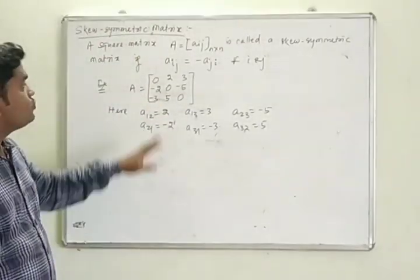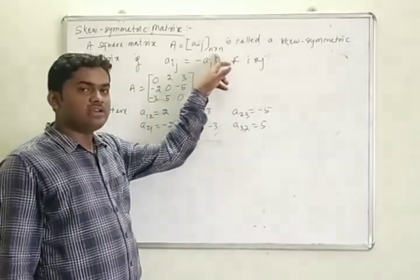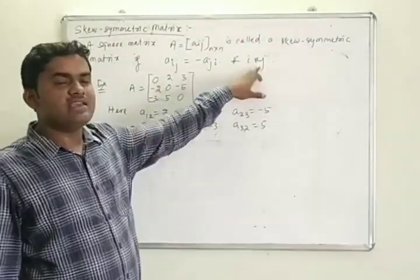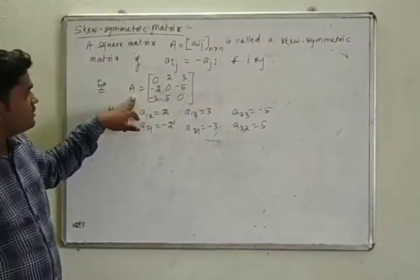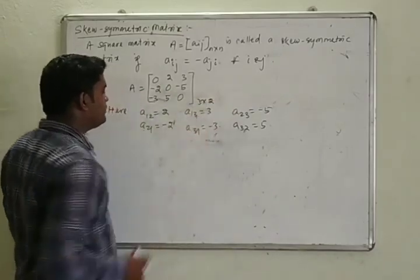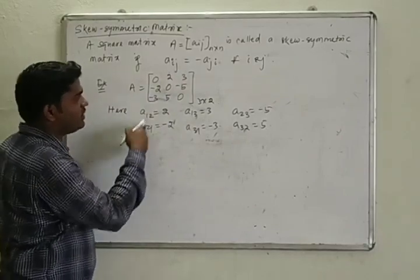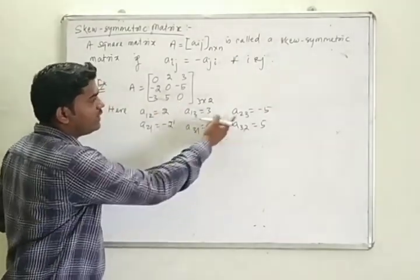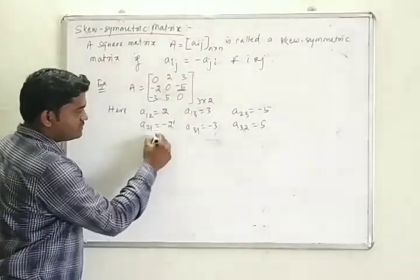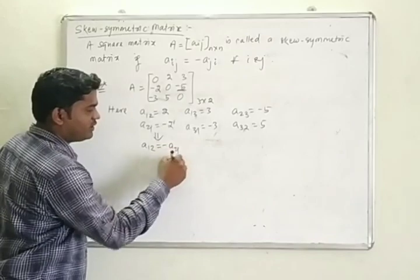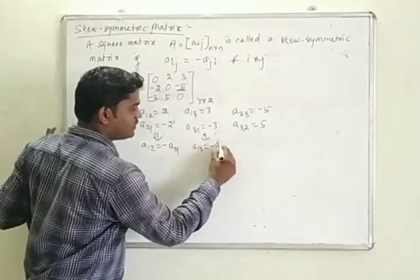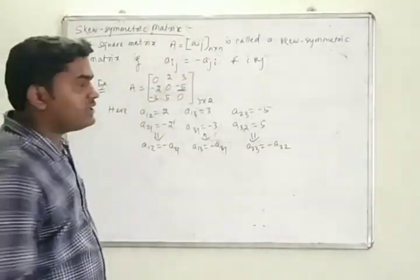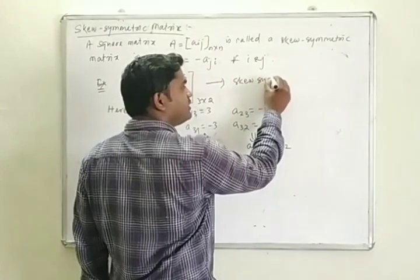Next, the skew-symmetric matrix. A square matrix A = [A_ij] of order N×N is called a skew-symmetric matrix if A_ij equals minus A_ji for all i and j. For example, in a 3×3 matrix: A_12 = 2 and A_21 = −2, A_13 = 3 and A_31 = −3, A_23 = −5 and A_32 = 5. This implies A_12 = −A_21, A_13 = −A_31, and A_23 = −A_32, so it is a skew-symmetric matrix.